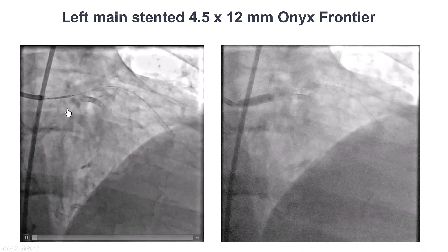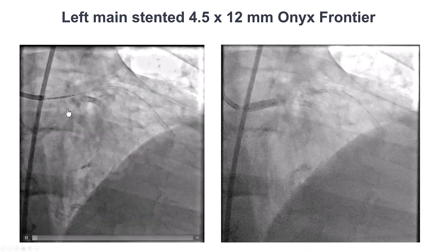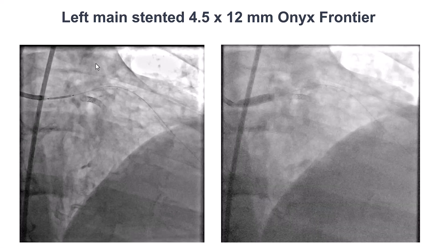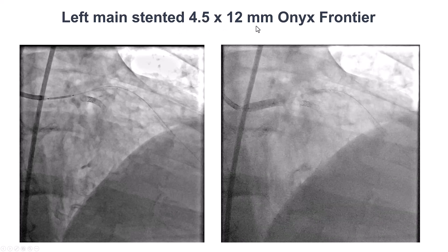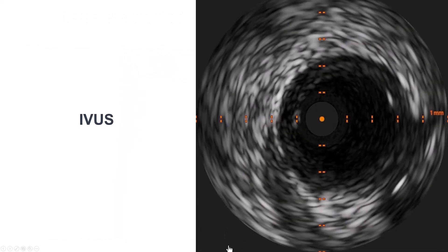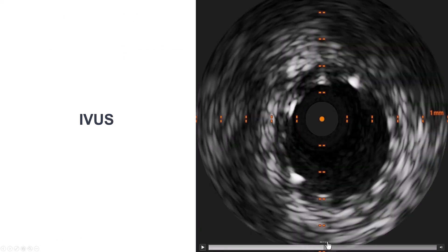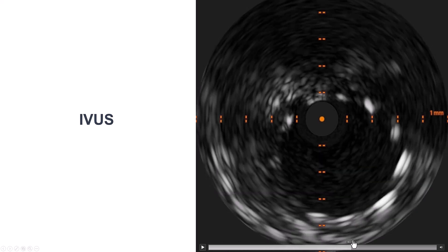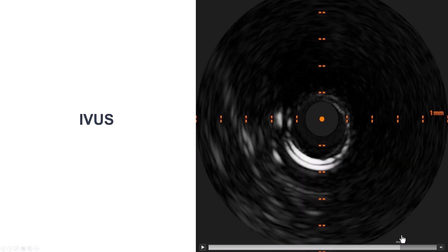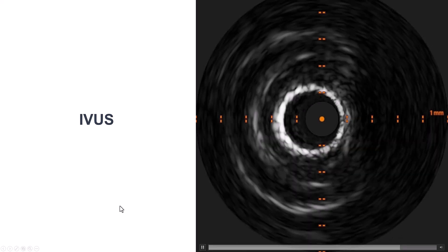We did intravascular ultrasound to better understand what is going on in the left main. We can actually see here that there is some tissue — it looks like a flap inside the ostium of the left main — so this is a left main dissection. The patient was very stable. There was no compromise in flow, but still we did not want to leave it untreated. So we placed a 4.5 by 12 millimeter Onyx Frontier stent, and this gave a nice result both by angiography and also IVUS, with good coverage of the left main, essentially going all the way out into the aorta.